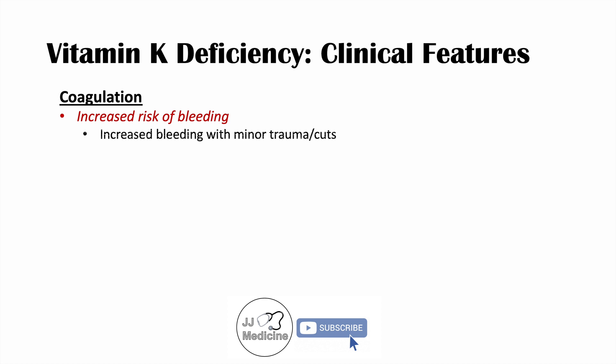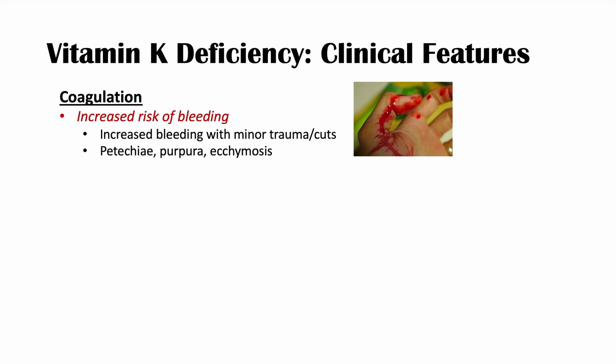Coagulation issues are one of the most overt clinical features of vitamin K deficiency. Without proper modification of coagulation factors 2, 7, 9, and 10, they can't work properly, leading to an increased risk of bleeding. We see increased bleeding with minor trauma, increased risk of dangerous hemorrhages, and we can also see petechiae, purpura, and ecchymosis on the skin.